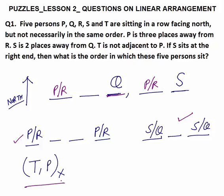T is not adjacent to P — T and P are not together. The position left for T is the second place. Since T and P are not together, the slot adjacent to T cannot be P, so that slot is R and the remaining slot is P. So the arrangement is finalized: R, T, Q, P, and S.